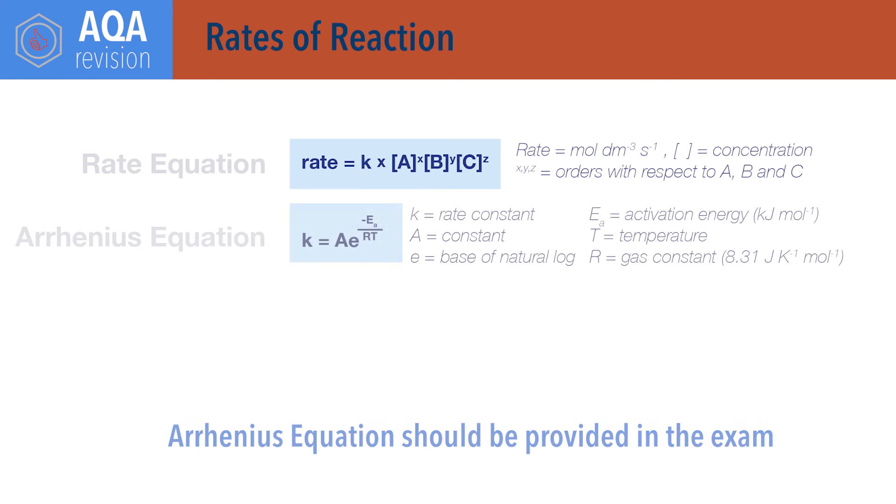K equals A times E to the power minus Ea over RT. This is the Arrhenius equation, where K is the rate constant, A is the Arrhenius constant or pre-exponential factor, E is Euler's number, a mathematical constant.